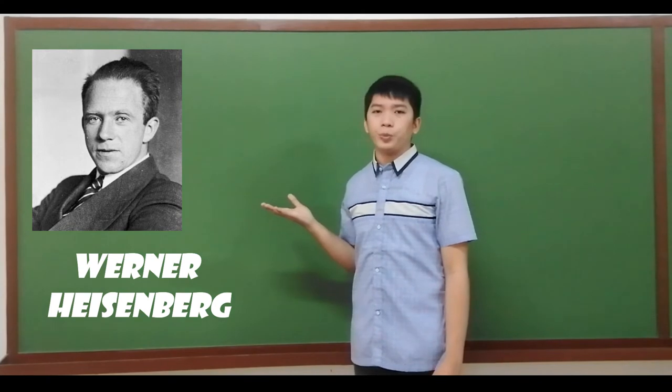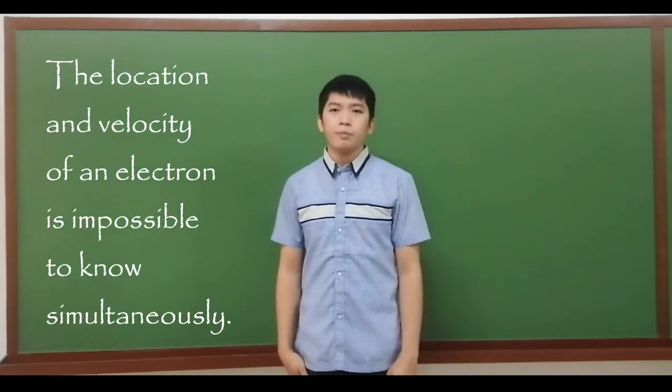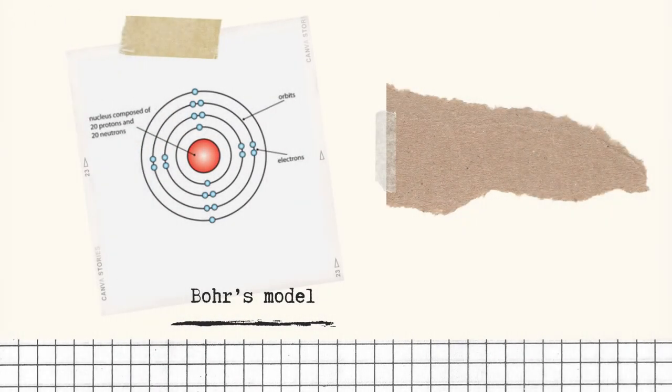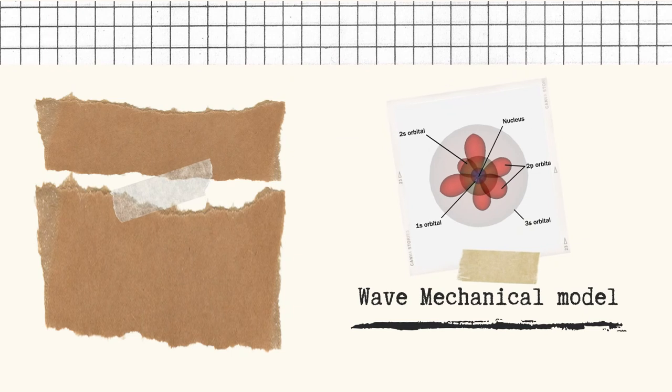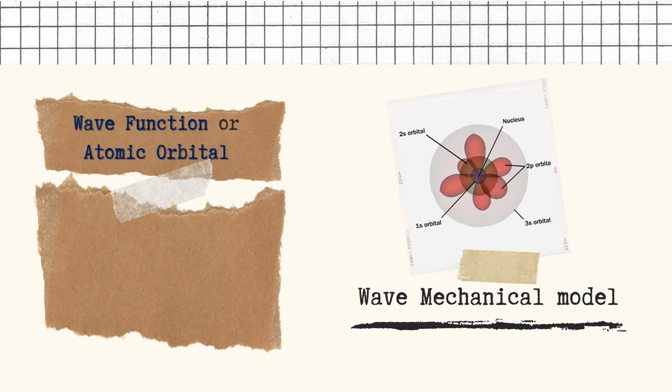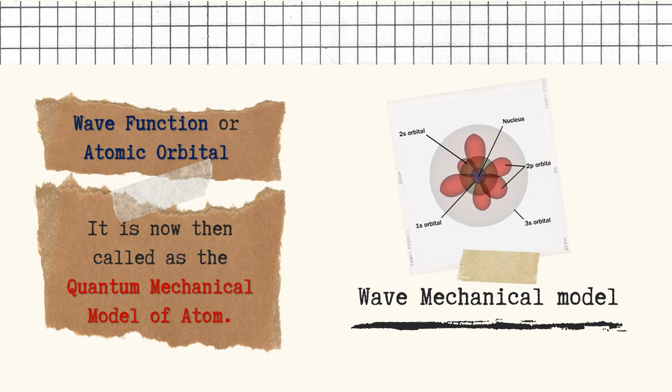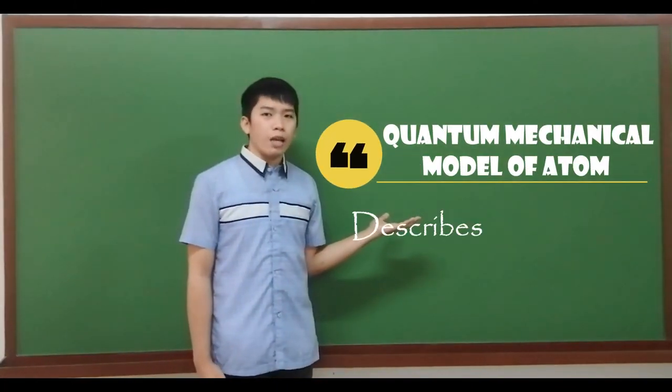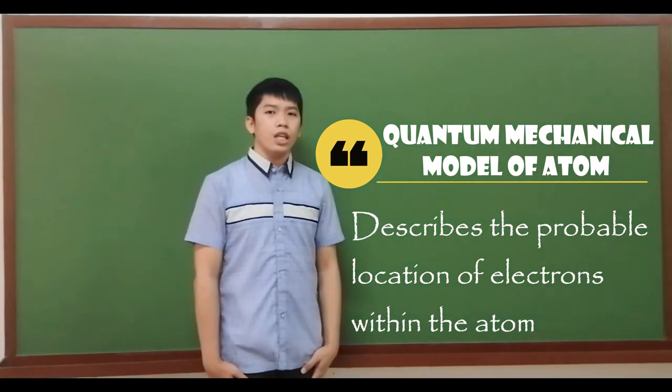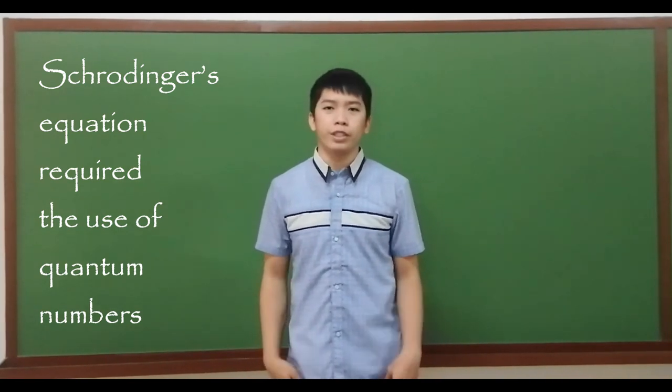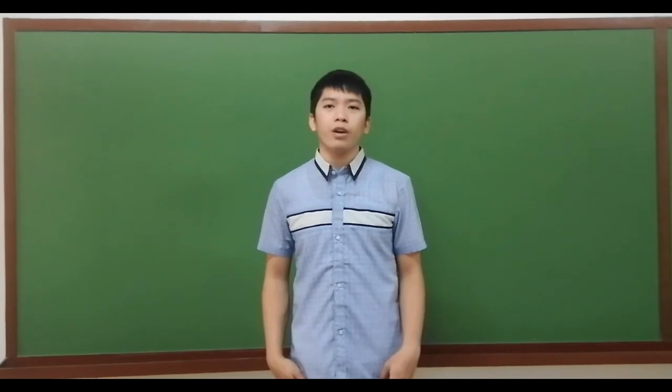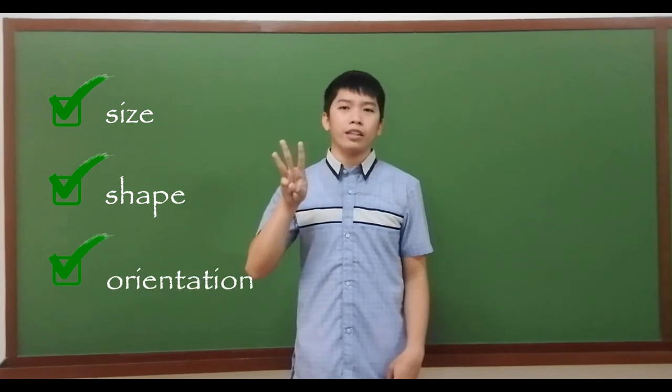Werner Heisenberg then proposed the uncertainty principle, which states that the location and velocity of an electron isn't possible to know simultaneously. In Bohr's model, electrons were assumed to move in circular orbits. On the other hand, in the wave mechanical model, a mathematical description of the electron called wave function or atomic orbital was introduced. It is now then called as the quantum mechanical model of atom. The quantum mechanical model of atom describes the probable location of electrons within the atom using atomic orbitals. Schrodinger's equation required the use of quantum numbers to describe each electron within an atom corresponding to their orbital size, shape, and orientation in space.